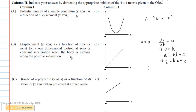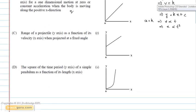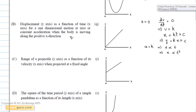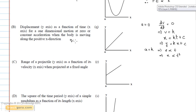Now considering the case when acceleration is constant, the velocity of the object will be directly proportional to time. Hence, the displacement of the object will be proportional to the square of time. According to this equation, graph option S seems to satisfy question B. Therefore, the correct answer for question B is option Q and option S.